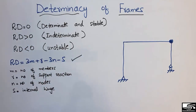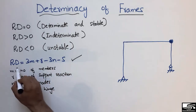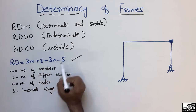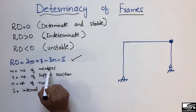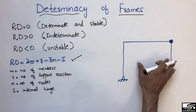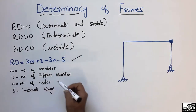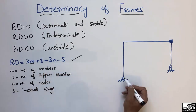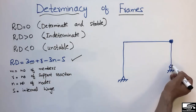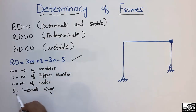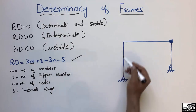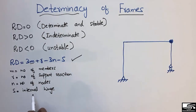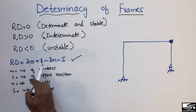We can find the redundancy of a frame by the formula: Rd = 3m + r - 3n - s, where m is the number of members in the frame, r is the number of support reactions, n is the number of nodes, and s is the number of internal hinges.